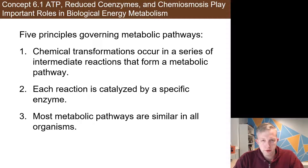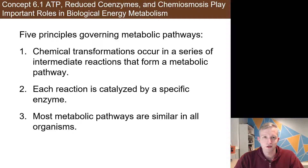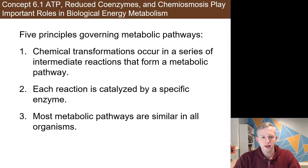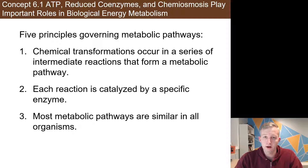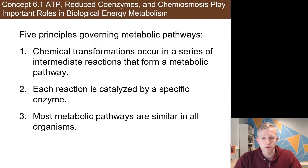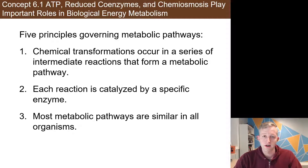There are five principles presented here. The first is that chemical transformations are always a series of many steps — this is often the part during the Calvin cycle and the Krebs cycle that we say we don't need to memorize. This goes hand in hand with the next principle: these reactions are catalyzed by different enzymes. We're aware that proteins swarm the inside of cells, each with a very specific job. So it shouldn't be surprising that photosynthesis and respiration involve far more tiny chemical reactions than we typically account for.